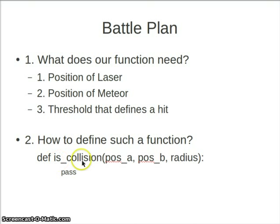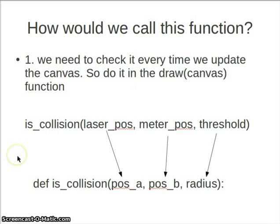If this is the way how we define a function, how can we call such a function inside of our code? The first thing we have to imagine is, if we want to check if there is a positive event, we have to look a lot of times. Actually, every time when we draw the canvas, we want to find out if the laser beam hits the meteor or not. The right position to where to put our call to the isCollision function is inside of the draw function, that is called by our simple GUI draw handler, which in my case, in the case of this code, is called draw parentheses canvas. Inside of this text body, we want to call the function isCollision. What do we pass on? We want to pass it the laser position, the meteor position, and the threshold.